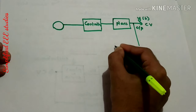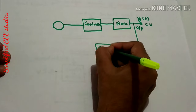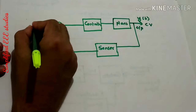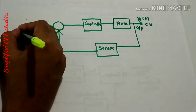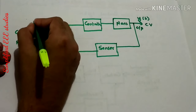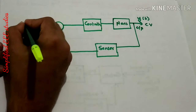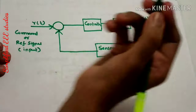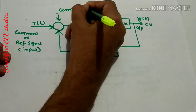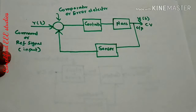Now consider a feedback element — there will be a feedback element, and you can use one sensor for measurement purpose. You can directly connect it to the comparator. The comparator will be comparing this with your command or reference signal, which I will call R(t). This section is generally known as the comparator or error detector.